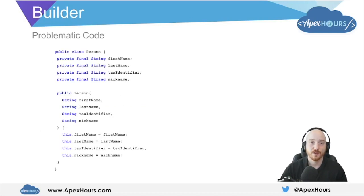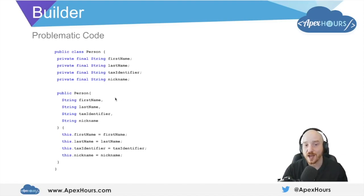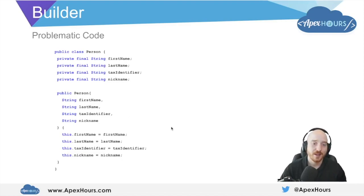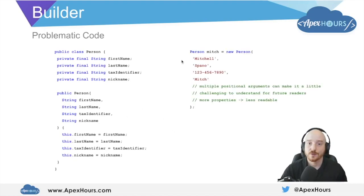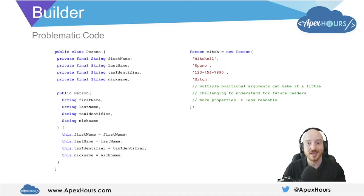What does that mean? Let's take a look. Here we have an example of a class called Person, and a person has a few private final attributes such as first name, last name, tax identifier, and nickname. Because these attributes are private and final, in order to create a person and specify the values for first name, last name, or tax identifier, all of these attributes must be passed in at construction. This is okay when we only have a handful of attributes, but it gets confusing because all of these attributes are of the same data type. When instantiating objects with constructors like this, we have to rely on the positional-based nature of these arguments. As more positional-based arguments get added — and they're all strings — it makes it really challenging to understand, leading to less and less readable code.